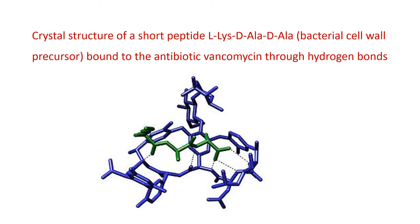The figure shows an example of molecular recognition. Here, the crystal structure of a short peptide L-lysine-D-alanine-D-alanine, that is a bacterial cell wall precursor, is shown bound to the antibiotic vancomycin through hydrogen bonds.